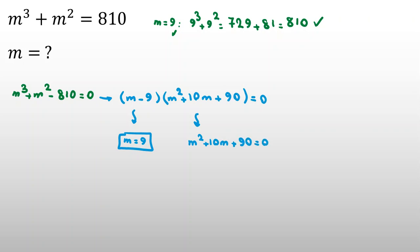m squared plus 10m plus 90 equal to 0. For solving this, we should use quadratic formula. The quadratic formula is what? If you have ax squared plus bx plus c equal to 0, then x equal to negative b plus minus square root of b squared minus 4ac, all over 2a.